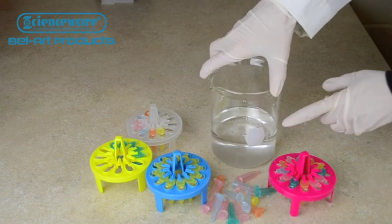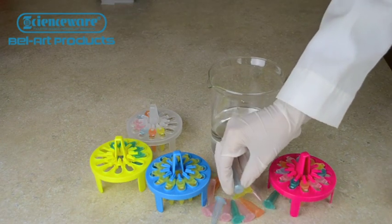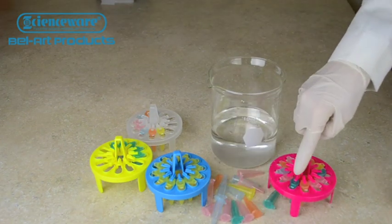PrepSafe Racks fit most 1,000 mil beakers and hold up to 12 1.5 or 2 mil microcentrifuge tubes in numbered locations.